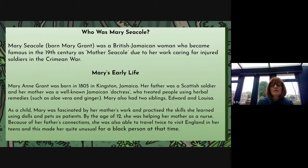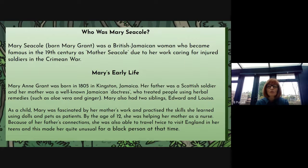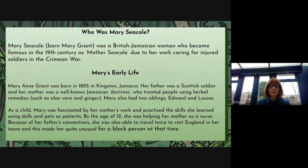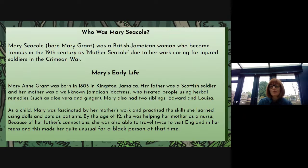It then goes on to Mary's early life. Mary Anne Grant was born in 1805 in Kingston, Jamaica. Her father was a Scottish soldier and her mother was a well-known Jamaican doctor who treated people using herbal remedies such as aloe vera and ginger. A doctor here is someone who hasn't got a medical degree but who can heal people through their use of more natural remedies. Mary also had two siblings, Edward and Louisa.